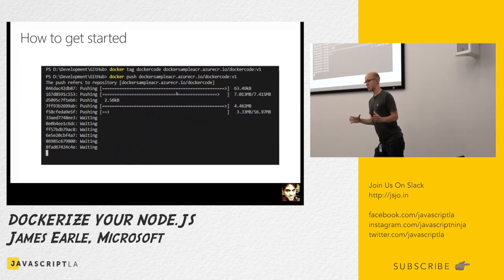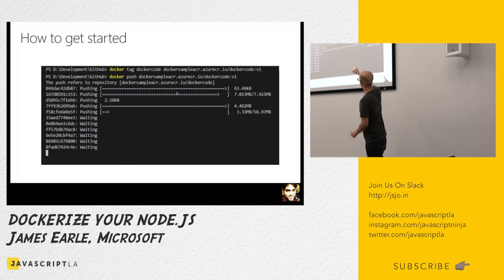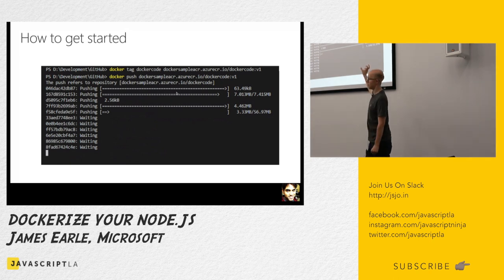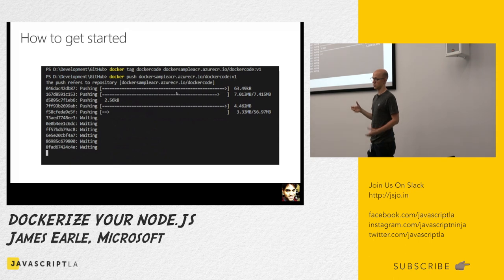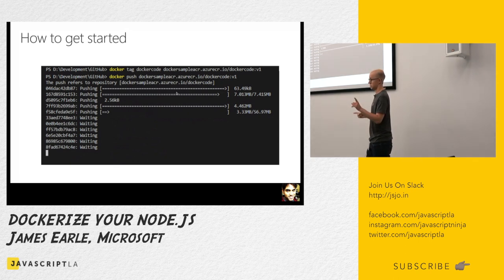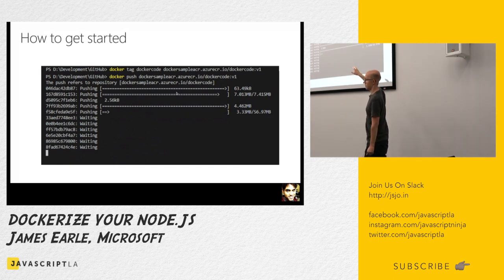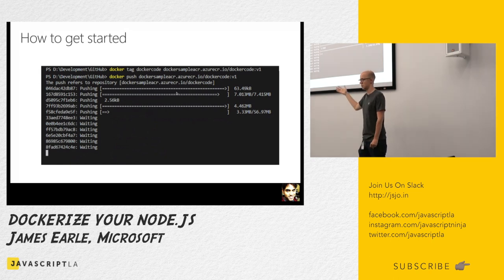By adding that URL, Docker knows that when you say 'docker push' in the next line, that is the location of where the image needs to go. So if you had a dockerhub.com URL there instead, it would push to Docker Hub — you just need to have an account and credentials.